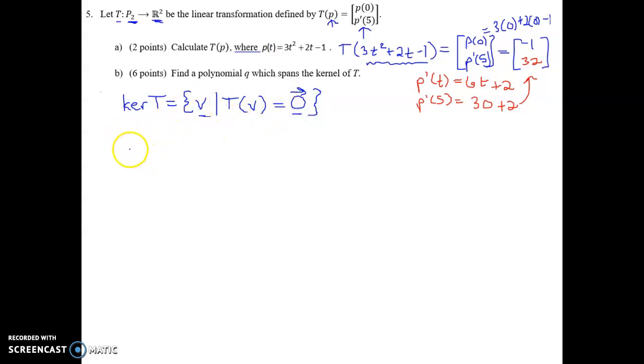So in this case, the kernel for this particular transformation would be the collection of all polynomials in P2 such that T of P, which is P of 0, P prime of 5, is mapped to the 0 vector in R2. So that'd be 0, 0.